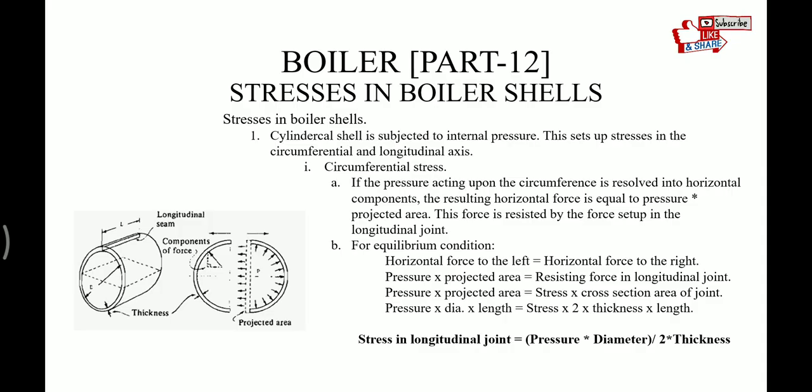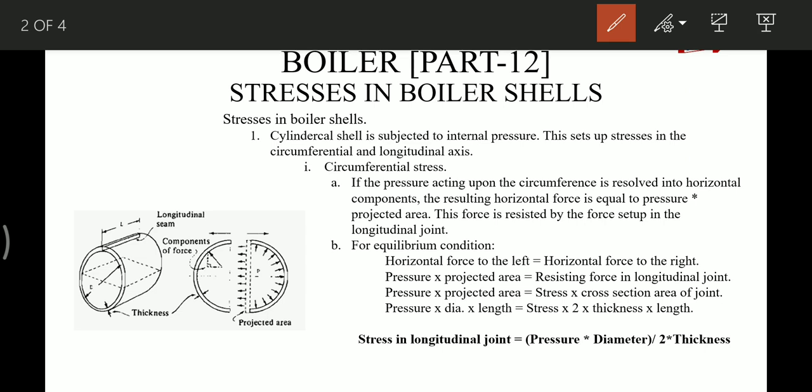Stresses in the boiler shell. The cylindrical shell is subjected to internal pressure, which sets up stresses in the circumferential and longitudinal axis. For the circumferential stresses: if the pressure acting upon the circumference is resolved into horizontal components, the resulting horizontal force is equal to the pressure into the projected area. This force is resisted by the force set up in the longitudinal joints. For equilibrium, horizontal force to the left equals horizontal force to the right — that is, pressure into projected area equals the resisting force in the longitudinal joint.